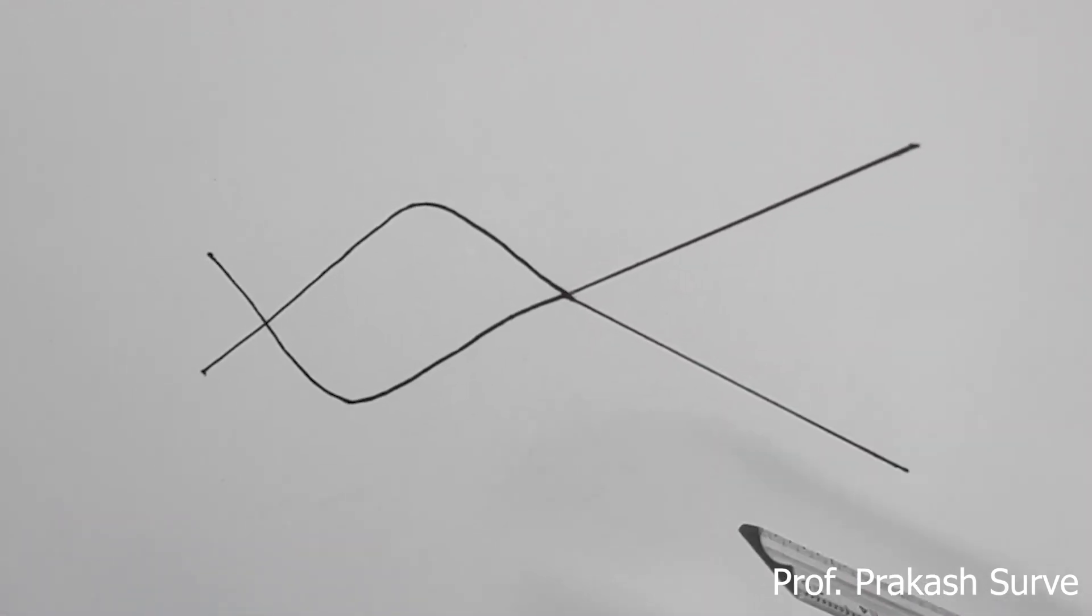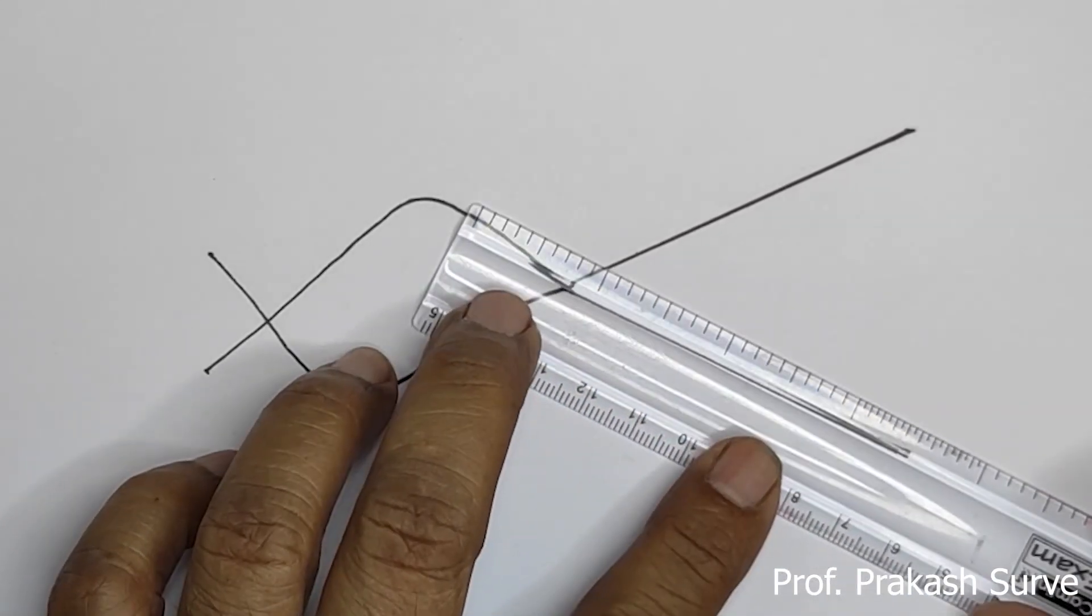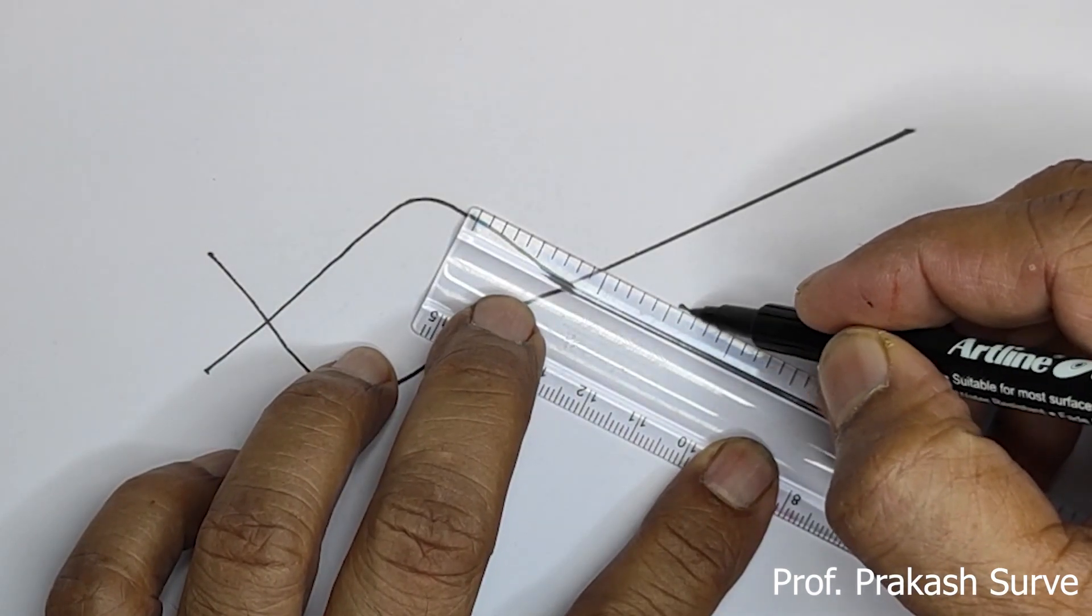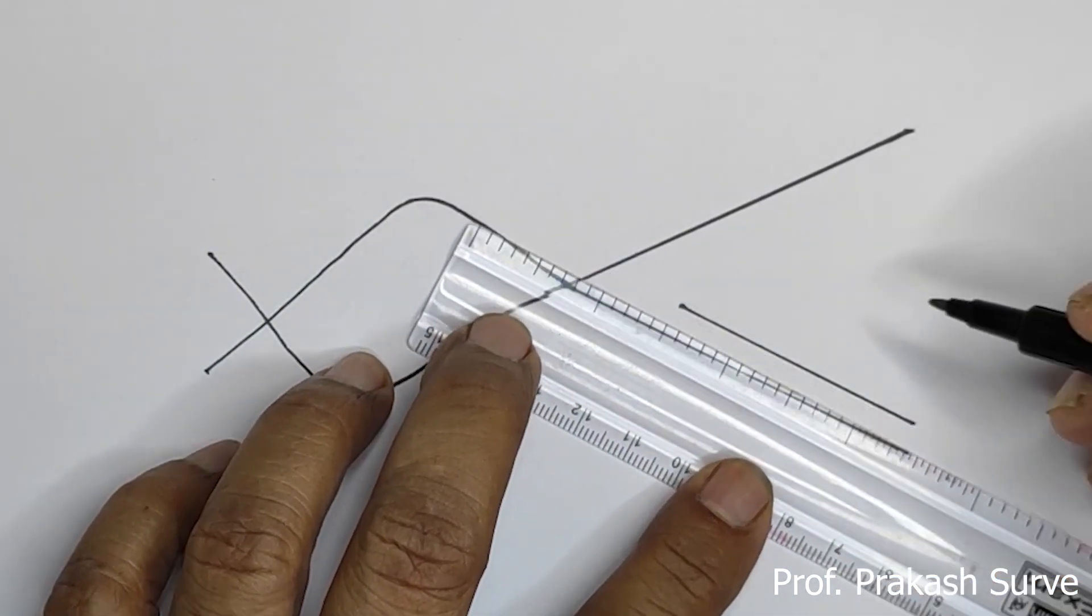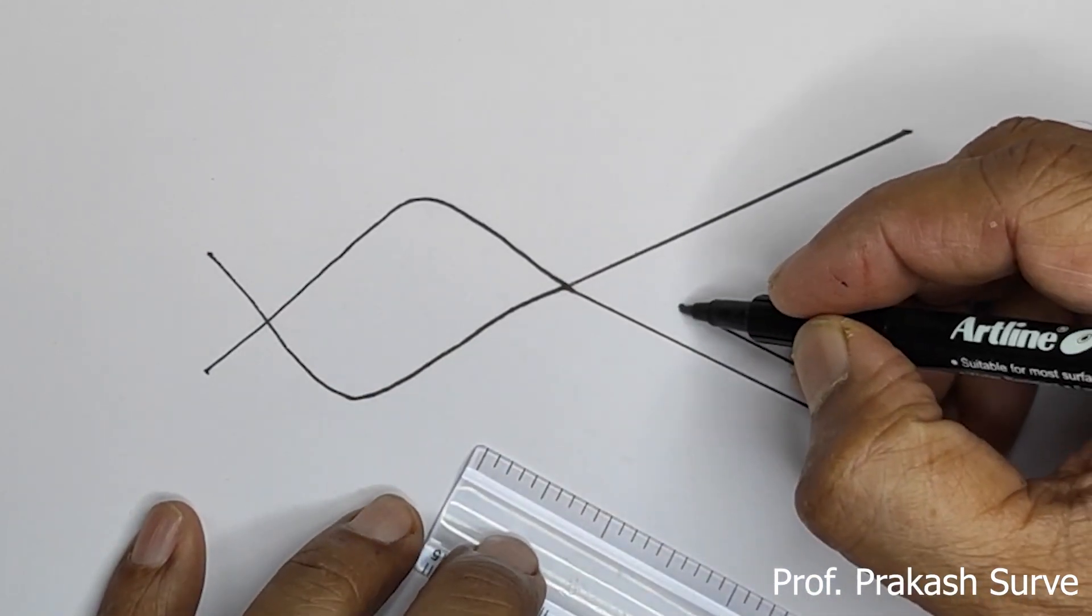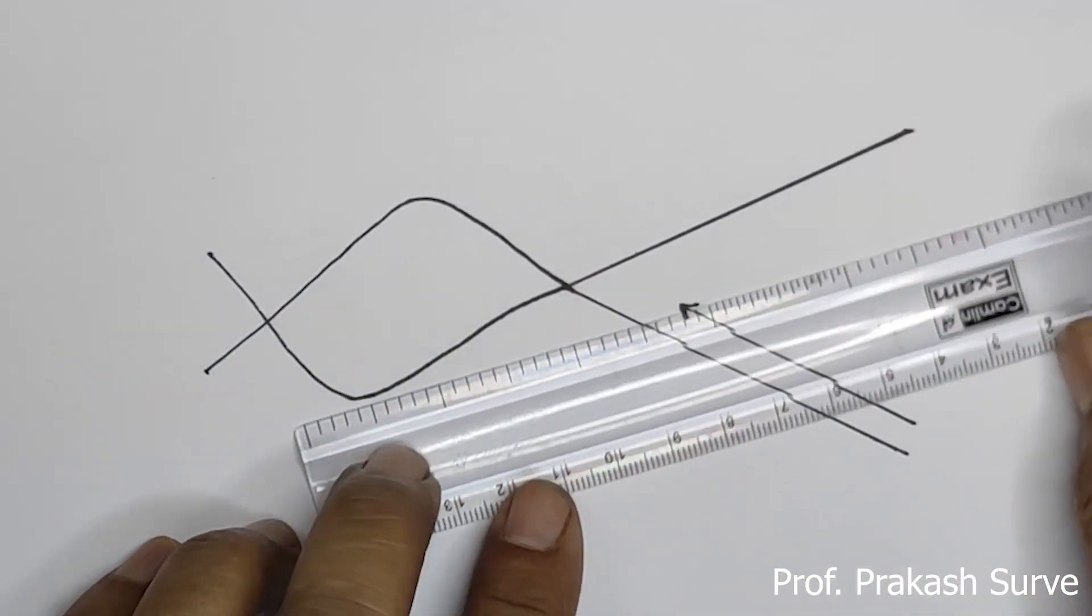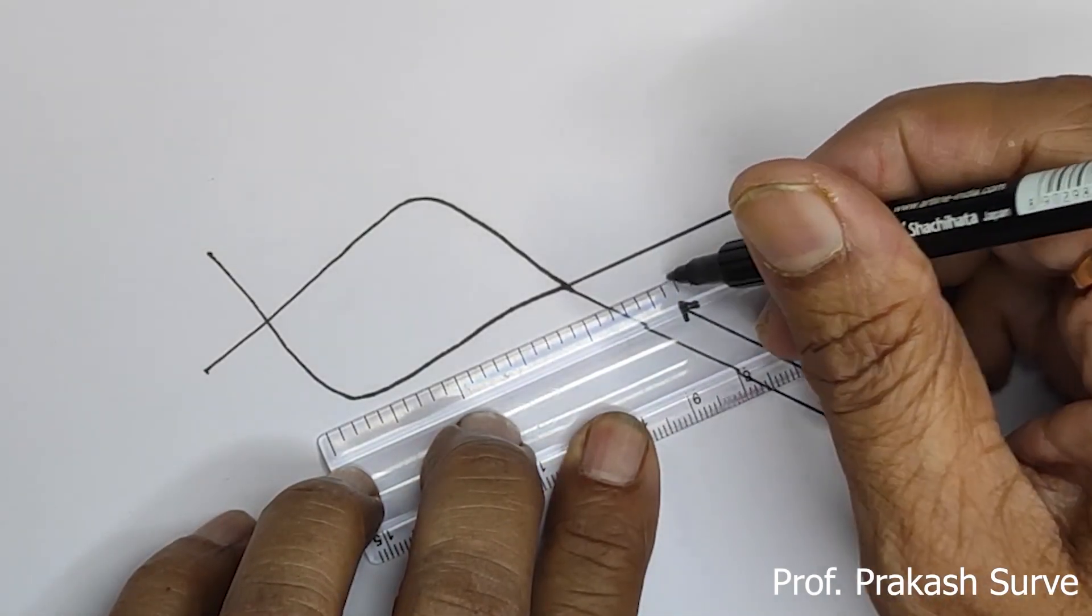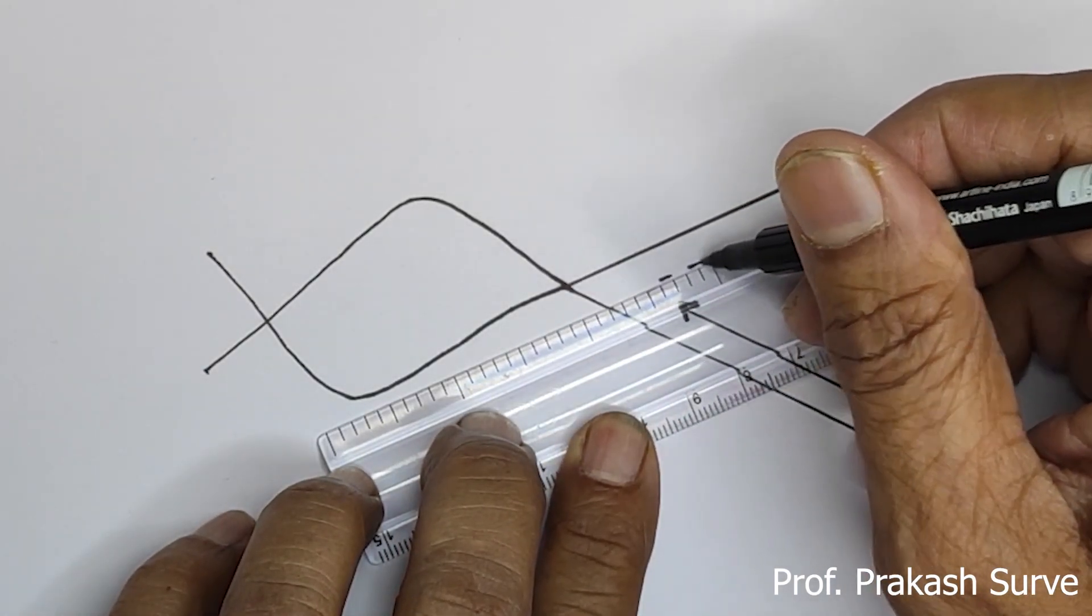Now we will do the corresponding to this. One line, this indicates that the leading strand which is continuous, and here discontinuous lagging strand, so like that.